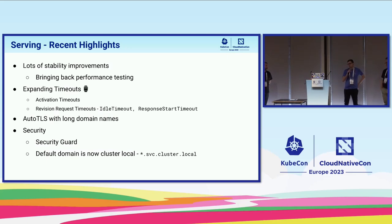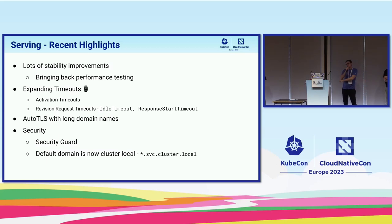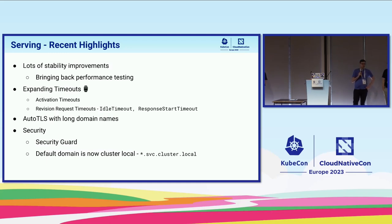Some recent highlights: I've been working on improving stability, one being not dropping requests during upgrades. We have an activator component that buffers requests when a revision is scaling up, and we ensure we don't drop requests during that transition. We also did some expansion for timeouts — if you're scaled to zero and activation fails, you'd want a timeout. Per-revision request timeouts were important to add, especially for WebSocket workloads where you want a very large timeout, plus an idle timeout.